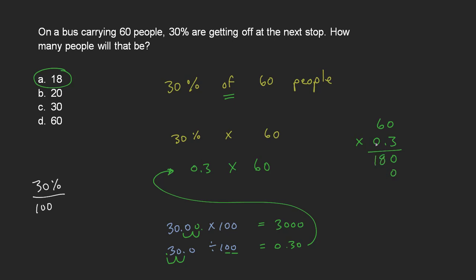And then when I do my next one, 0 times 0 is 0, 0 times 6 is 0. This gives me 180. However, if you have any decimals that show up in your original terms, you need to introduce them. I have one decimal place here, and so I need to bring one decimal place into my answer.